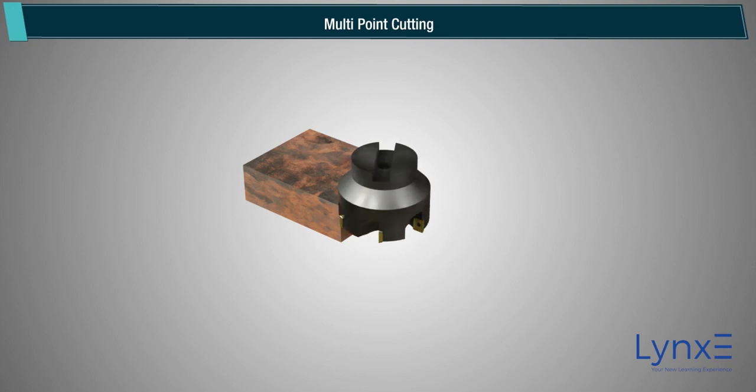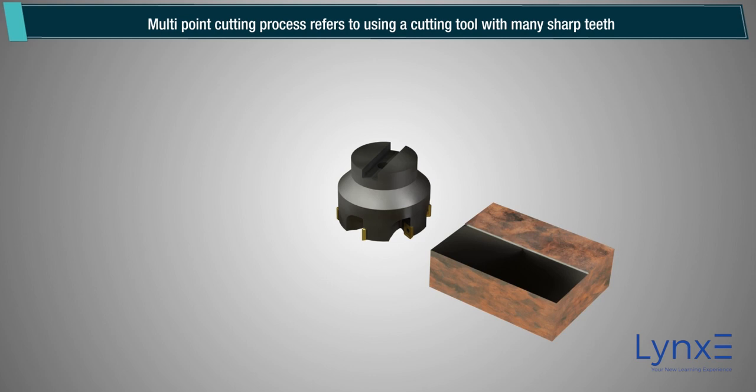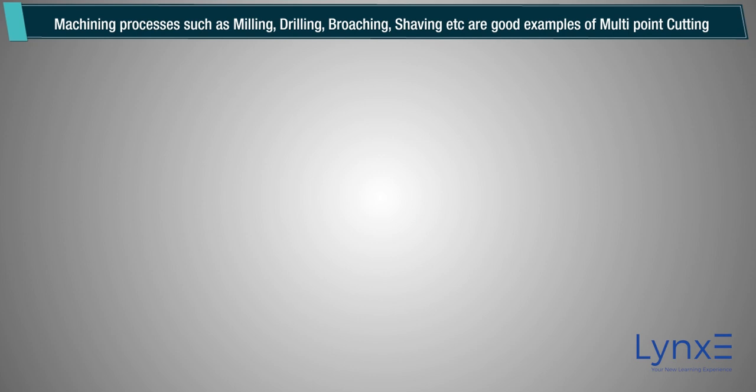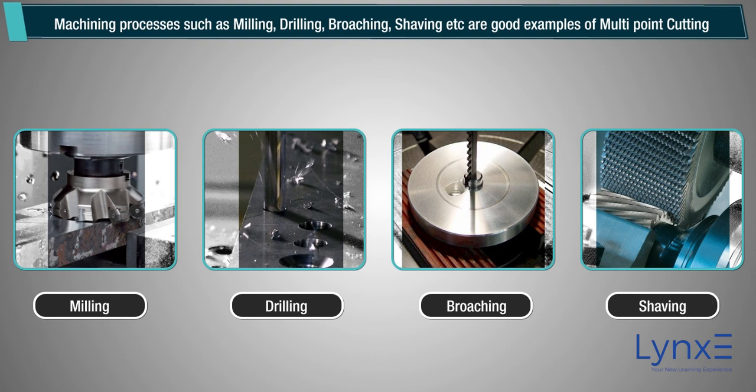Multipoint cutting. The multipoint cutting process refers to using a cutting tool with many sharp teeth, also known as a multipoint cutting tool, that moves against the workpiece to remove material. Machining processes such as milling, drilling, broaching, and shaving are good examples of multipoint cutting or metal removal processes.